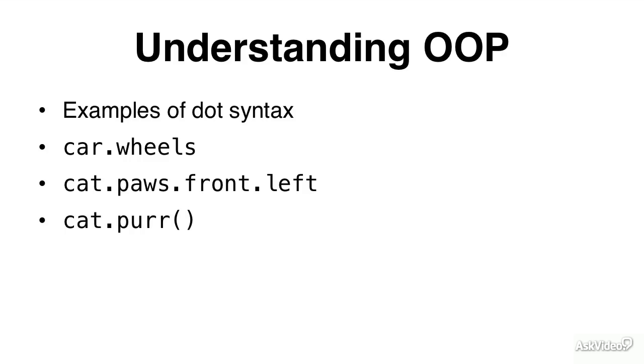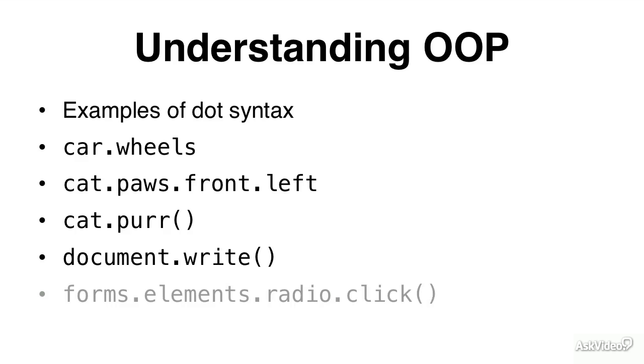cat.purr - so here we're adding a method after the object cat. We're instructing the cat to purr. Wish it was that easy. And here's a real JavaScript example: document.write - .write is our method to write something to that document. Here's another example: forms.elements.radio.click. So here we're looking at forms, finding all elements within the forms, and then finding all radios within those elements, and then we're going to click.